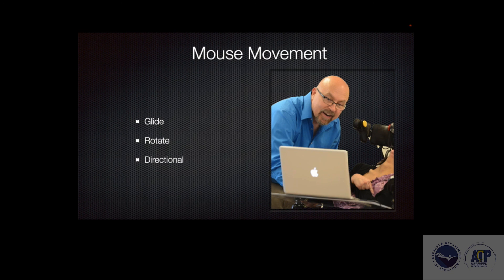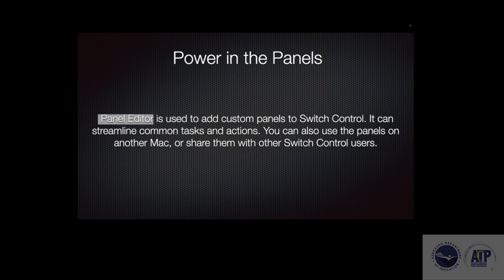For mouse movement you can use gliding, rotational mouse, or directional mouse — three different types of mouse movement. Panels are used to add custom panels to your switch control, streamline common tasks and actions, and you can share panels with other Switch Control users or use them on another Mac.